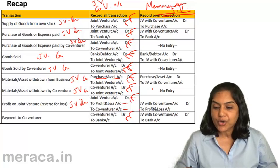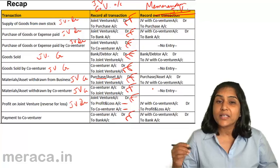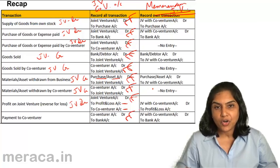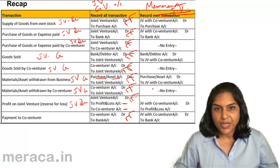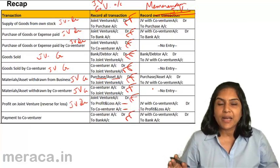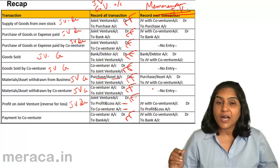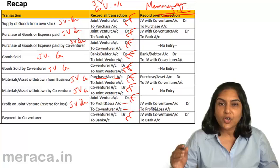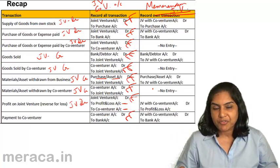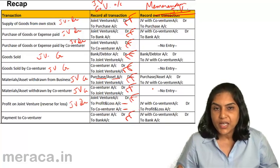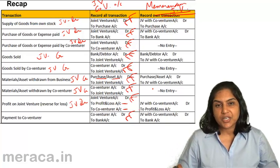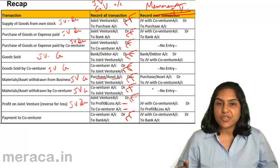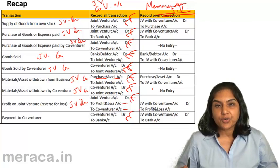Next is where the memorandum joint venture account is prepared. It is prepared in order to ascertain the profit or loss on joint venture — all expenses are put on the left side and all incomes on the right side, and the balance is either profit or loss. As far as accounting entries are concerned, Aakash will record only Aakash's part of the transactions — if Aakash spends money, receives money, earns a profit, or incurs a loss. Aakash does not pass any entry with respect to transactions entered into by Bikash.